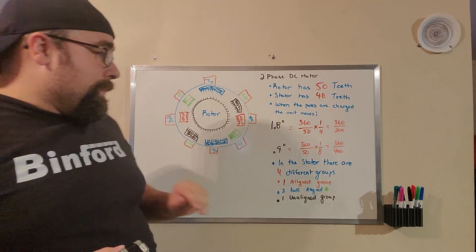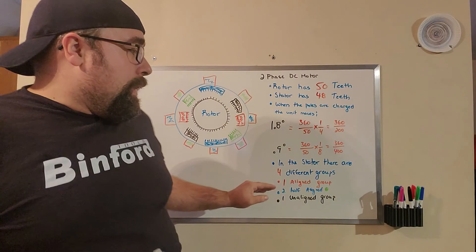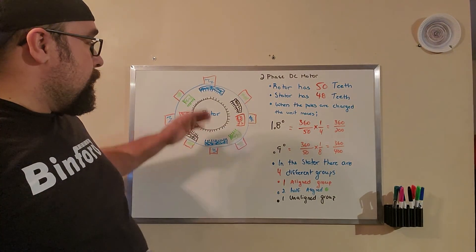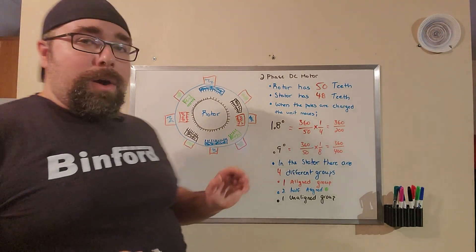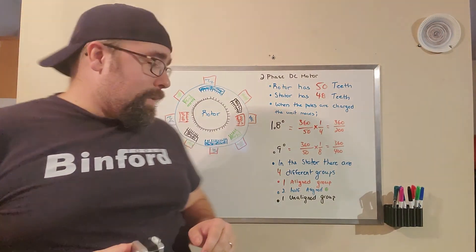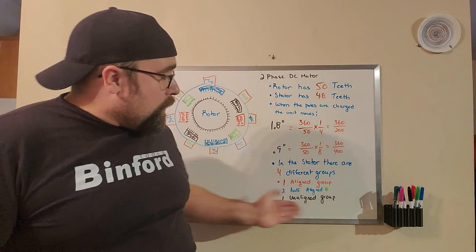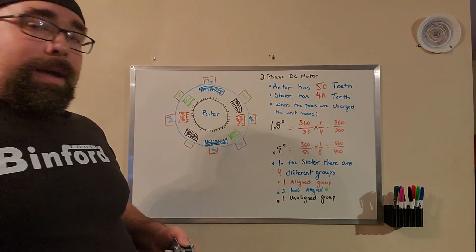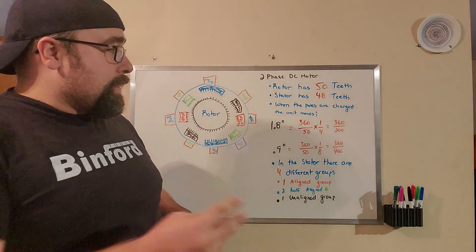We have four different groups actually. So our red group here is aligned to the teeth, and then our blue and our green groups are half aligned, so they're just out ever so slightly. And the final group, the black, are unaligned. And what this allows us to do is to have four different positions for each tooth to be in.